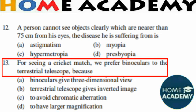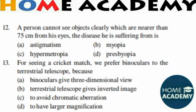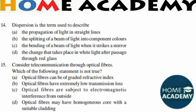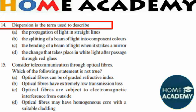Question number 14: Dispersion is the term used to describe what? It is used to describe the splitting of a beam of light into its component colors.